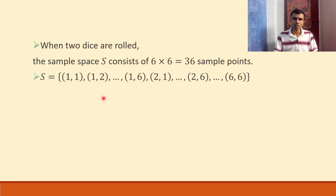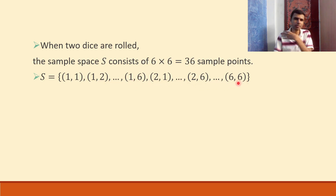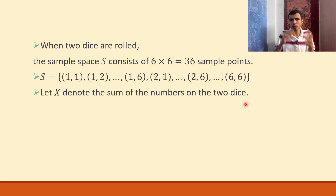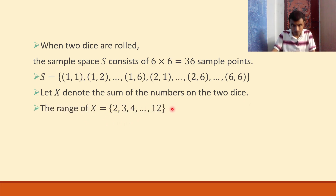So this is my sample space, from (1,1) through (1,6), and (2,1) through (2,6), and till (6,6). In the textbook, this is how it was given — I am just using the same thing. Let X denote the sum of numbers on two dice. So capital X can be 2, 3, 4, 5, 6, up till 12 — the sum of numbers on two dice.